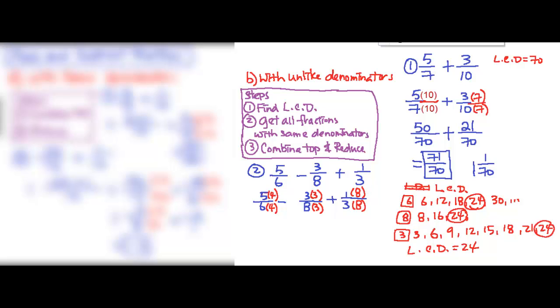After you multiply all that, you're going to have, for the first one, you have 20 over 24. The second one, you have 9 over 24. The last one, you have 8 over 24.